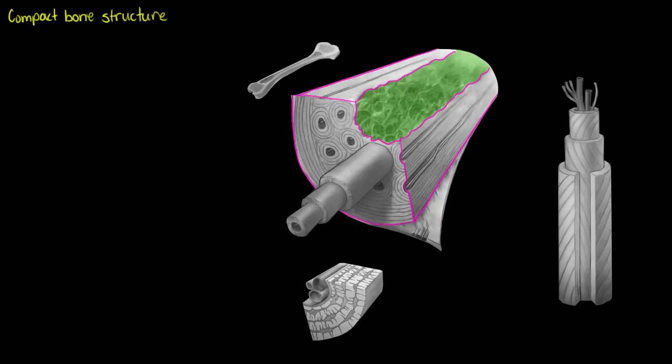I'll just point out this area that I've highlighted in green is actually spongy bone and we won't be focusing on that in this video. So just everything in the pink outline is our compact bone.